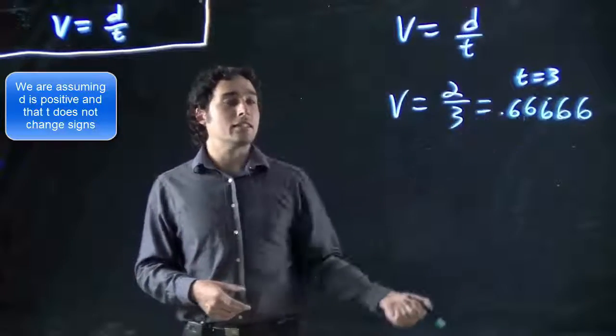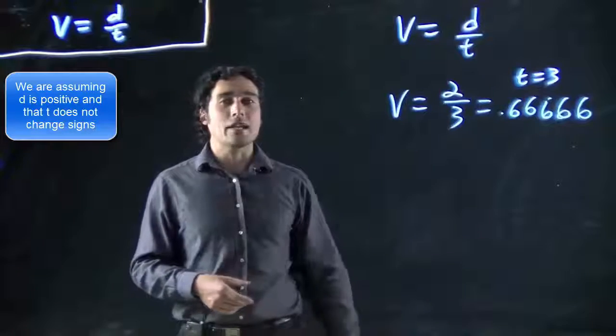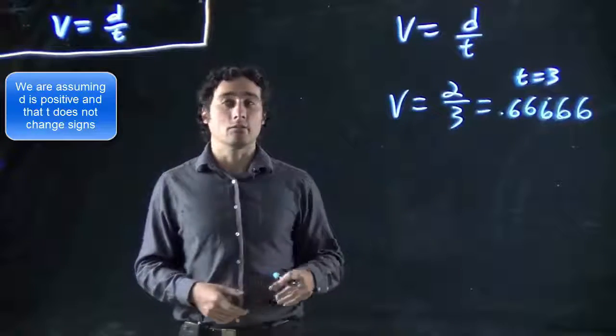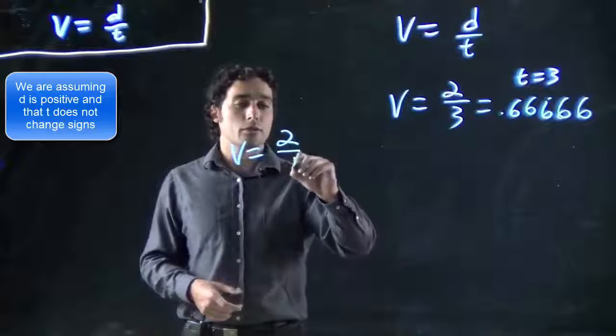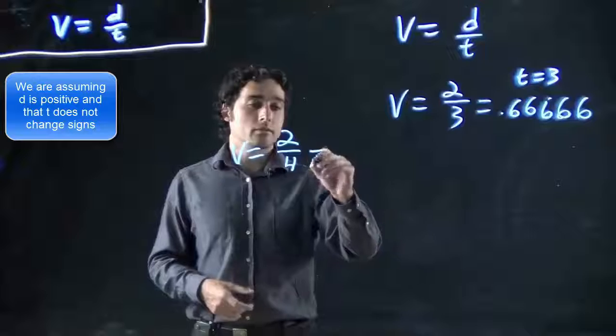So we want to increase t. Let's make t equal 4 now, just increase it a little. In that case, what is v? v equals 2 over 4, or 0.5.